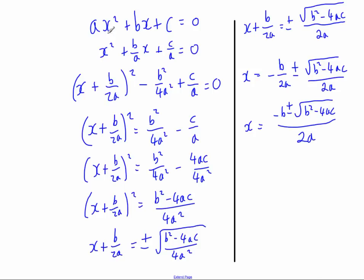And there you go. We started off with a generic quadratic equation — ax squared plus bx plus c equals zero — did completing the square on it by dividing through by a first, then completing the square, and we derived the quadratic formula. That means we can substitute in the values of a, b, and c into this formula and find the values of x. That's where the quadratic formula comes from.